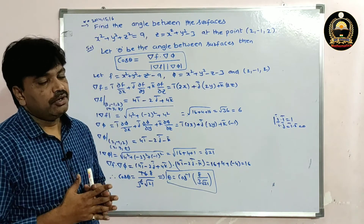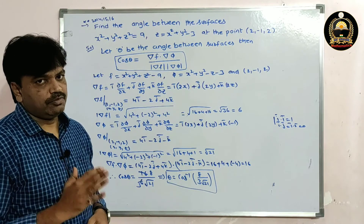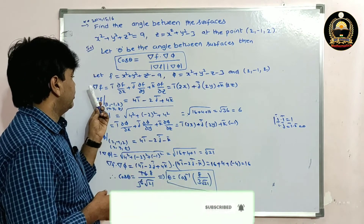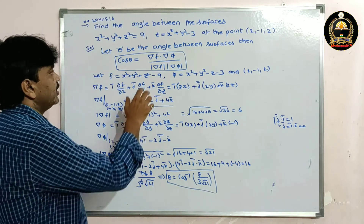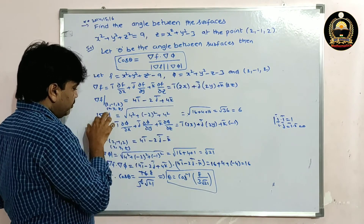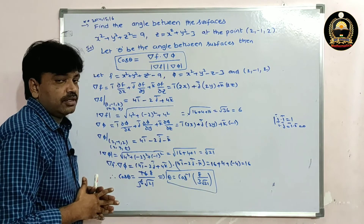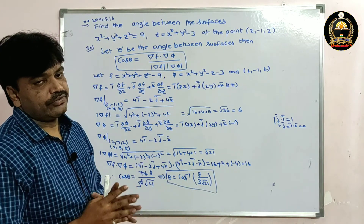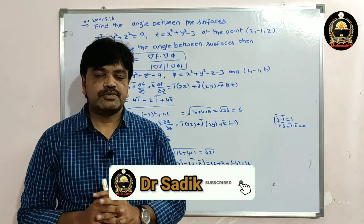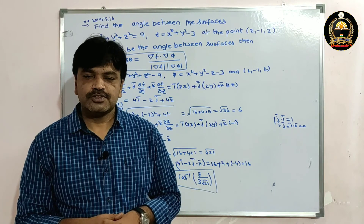To summarize: the angle between two surfaces is the angle between their normals. Use the formula cos θ = (∇f · ∇φ) / (|∇f| · |∇φ|). Identify f and φ, compute the gradients at the given point, find their moduli, and substitute into the formula to get the required angle. Hope you understand. Please subscribe, like, and share this video. Thank you for watching.